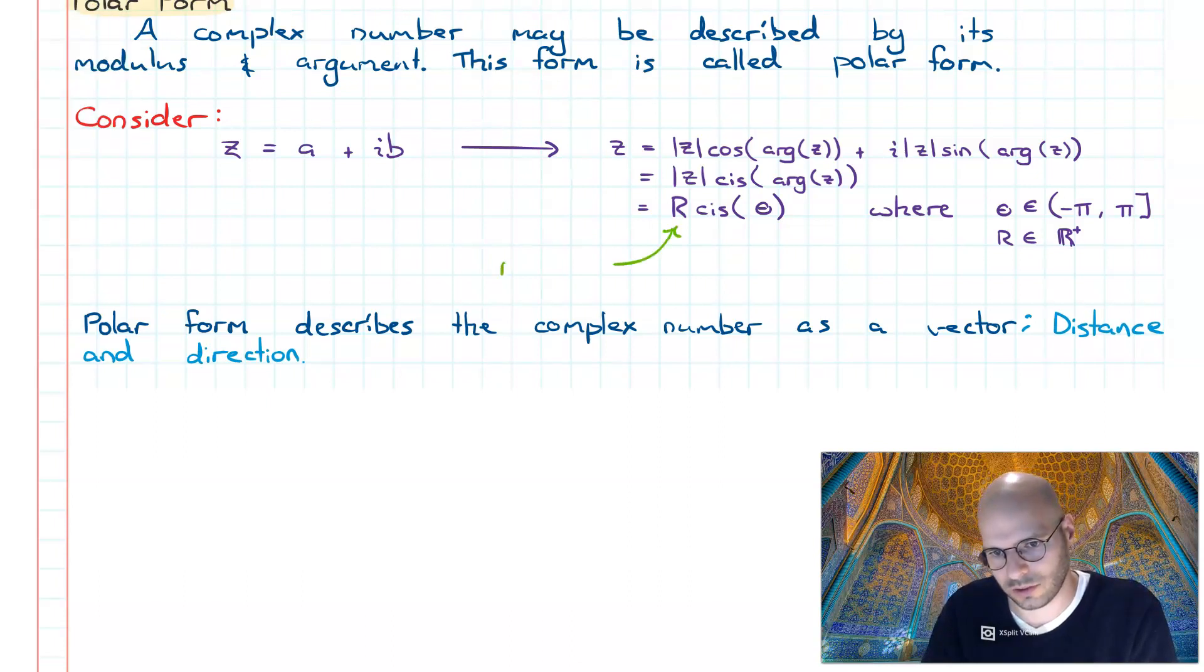And the theta represents our direction. So magnitude being the length of our vector and the direction being whereabouts it's pointing to.